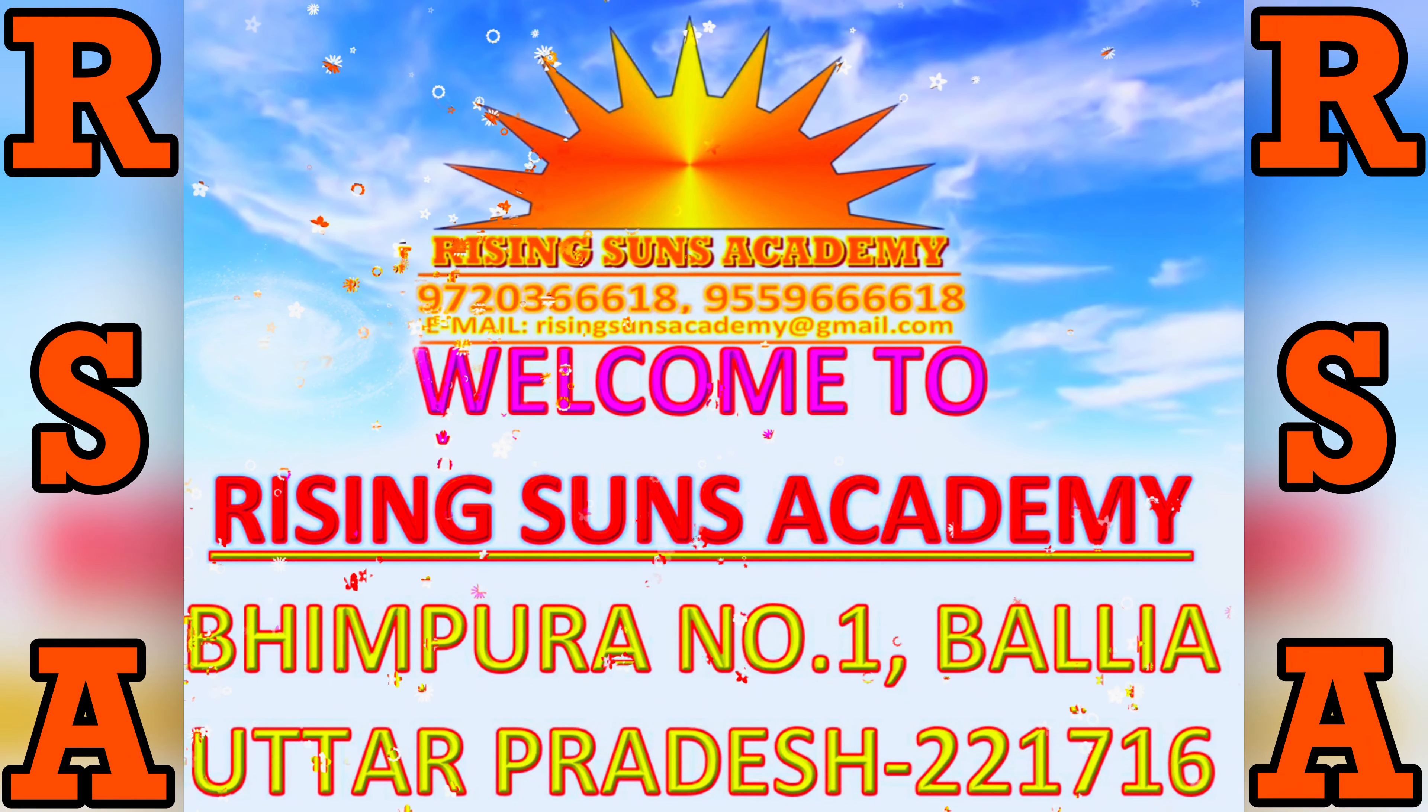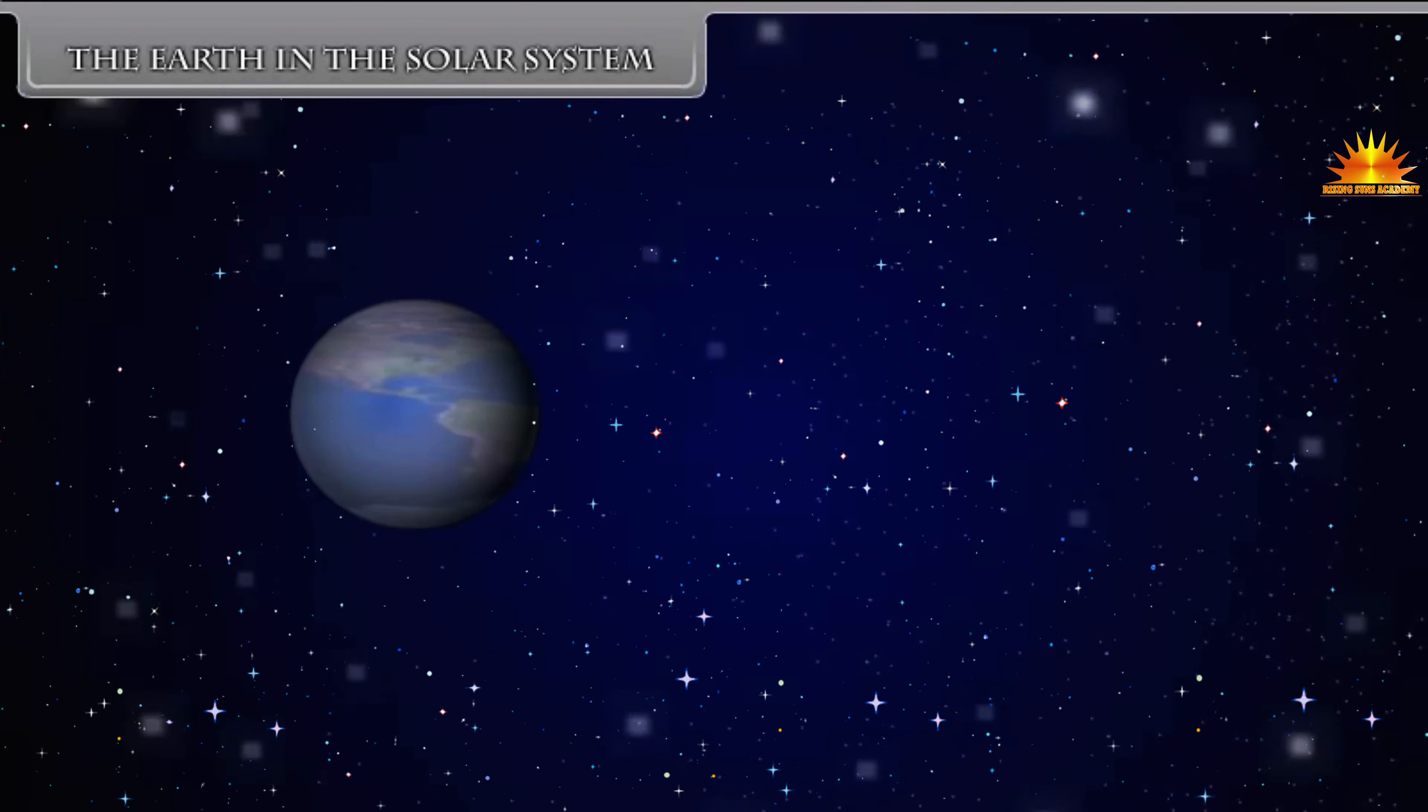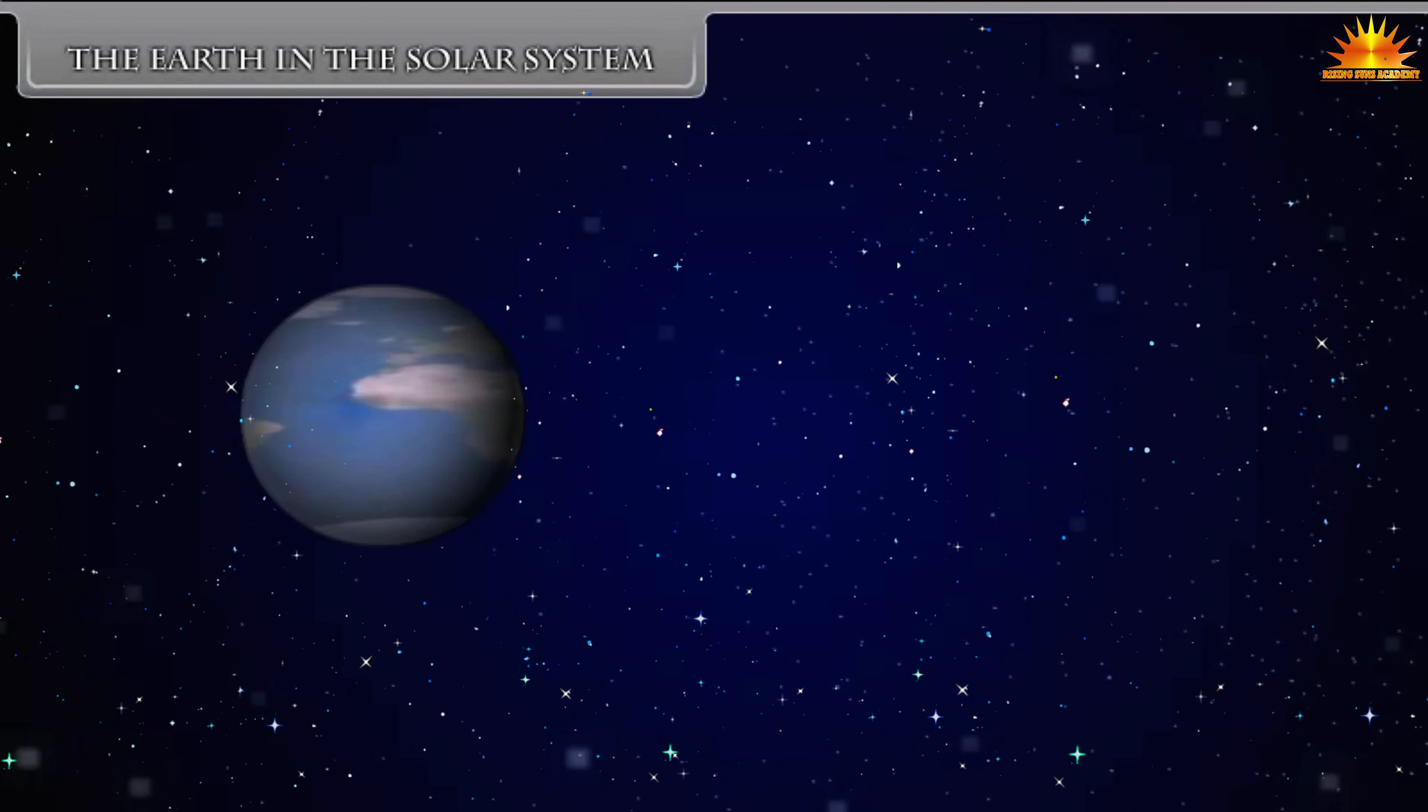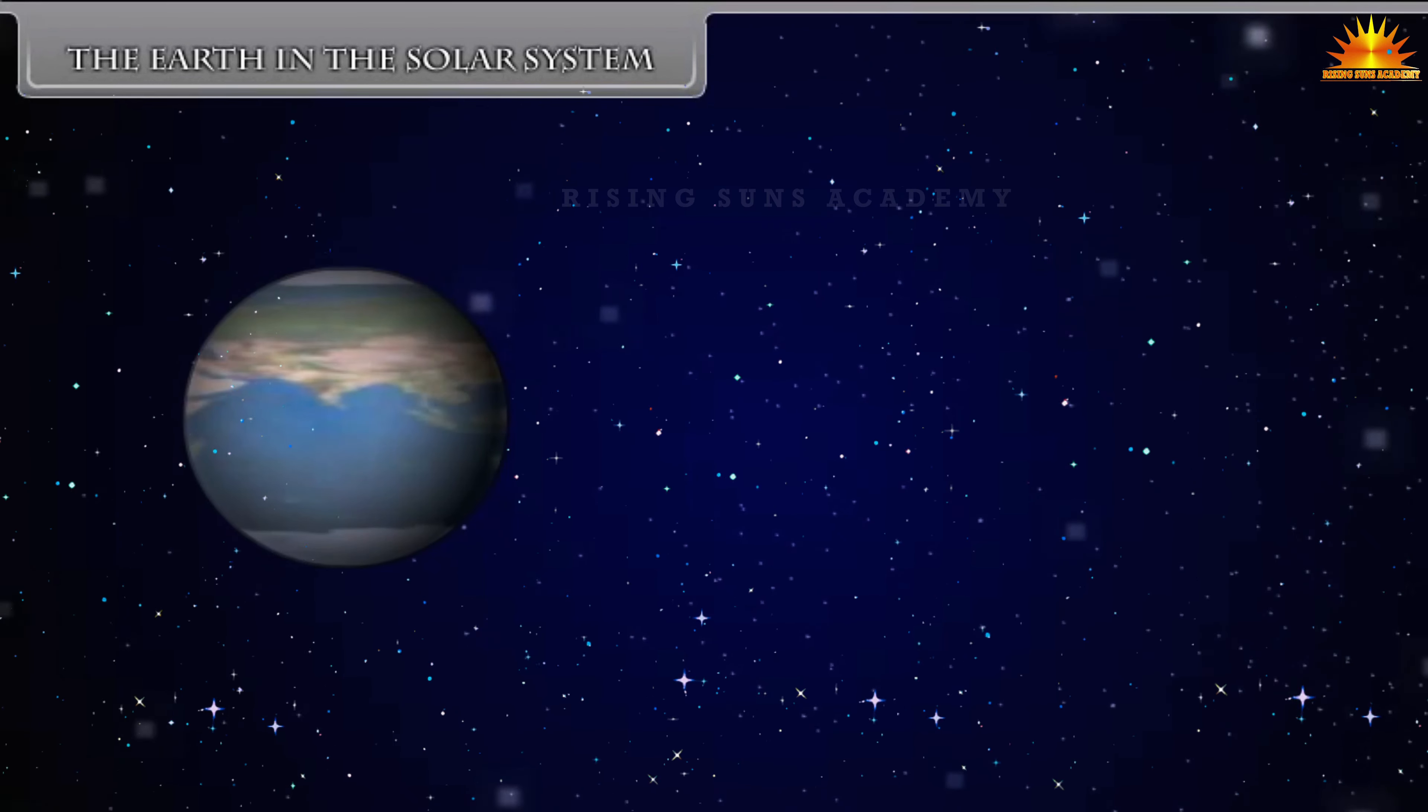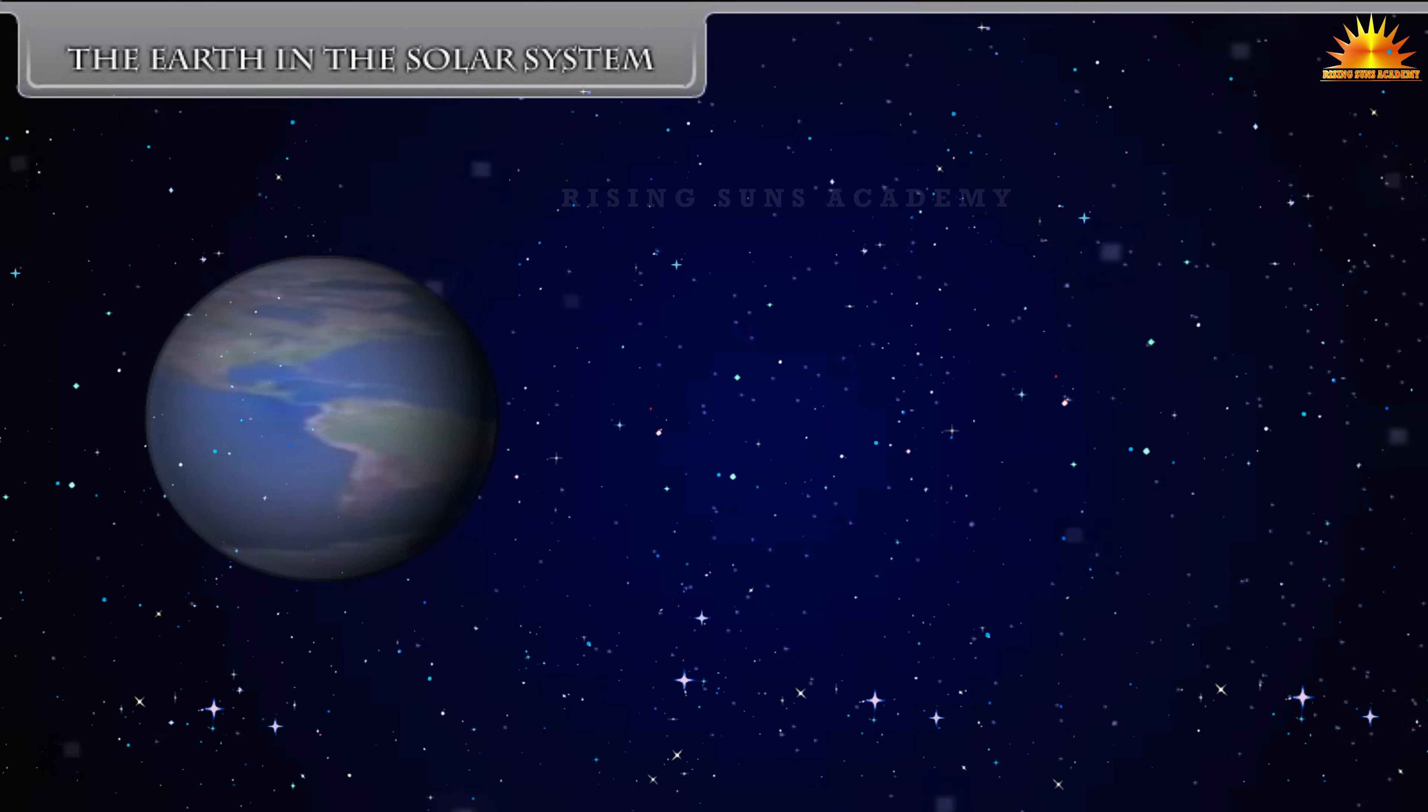Welcome to Rising Suns Academy. The Earth in the Solar System. As night falls, we can see thousands of twinkling objects in the sky. The sun and all these twinkling objects are called stars. We feel surrounded by shining celestial bodies. We cannot count these celestial bodies with our naked eyes because they are several millions of kilometers away from us.